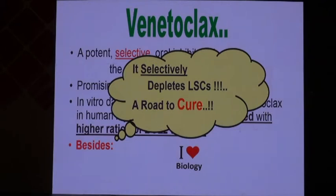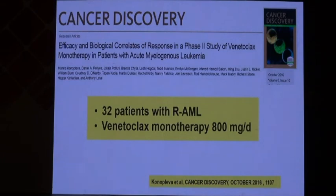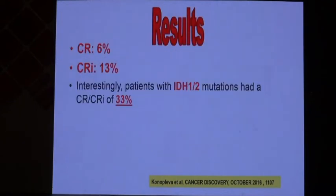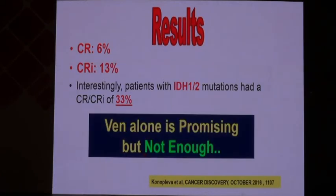An important study in almost 32 patients with relapsed acute myeloid leukemia receiving venetoclax monotherapy showed some CR rates and CRs with incomplete blood recovery. Interestingly, patients with IDH1 or IDH2 mutations had a CR rate rising to almost one-third. However, venetoclax alone is not enough.